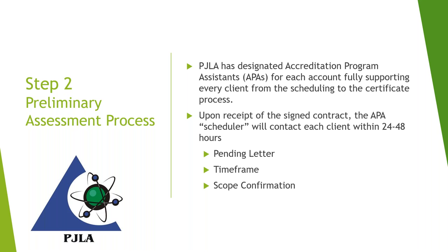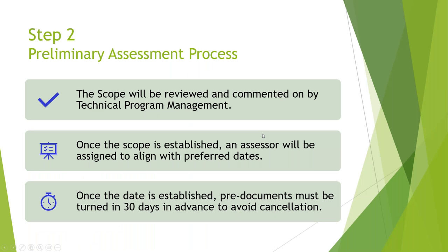The APA will send you a scope based on what you filled out on the application and ask you to review it — they're confirming your final scope before the assessment goes forward. This may go back and forth to get it clean and concise, ready to be published on the website. The scope then goes to our program managers to approve it. Once that scope is established, we assign an assessor based on your company, what you test or calibrate, lined up for the dates you want. Once dates are confirmed, we send you a confirmation with the dates and who your assessor is.